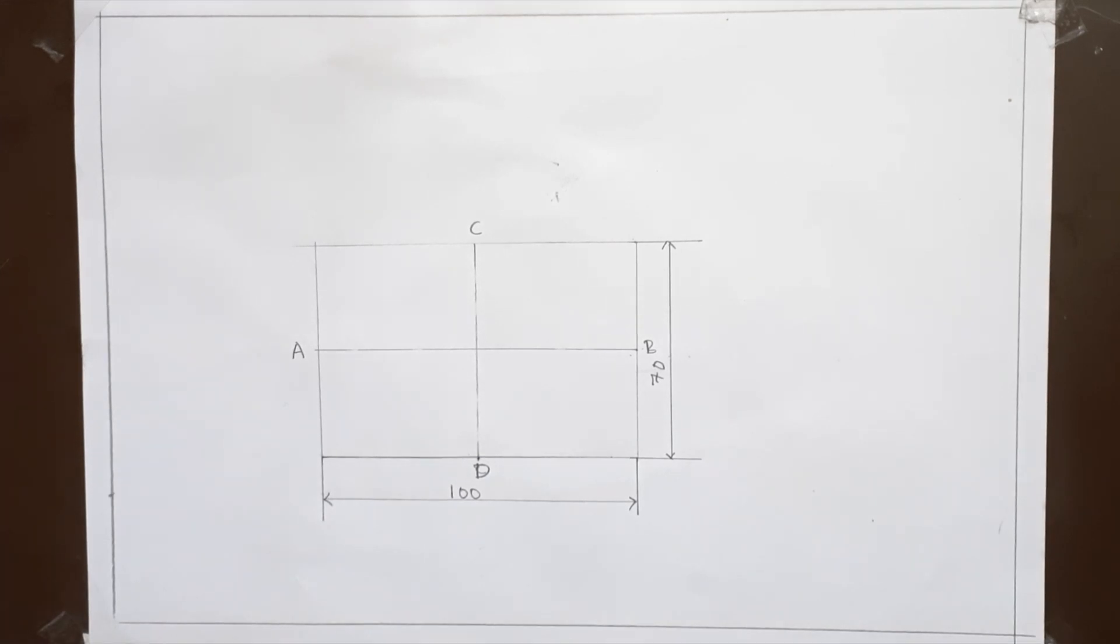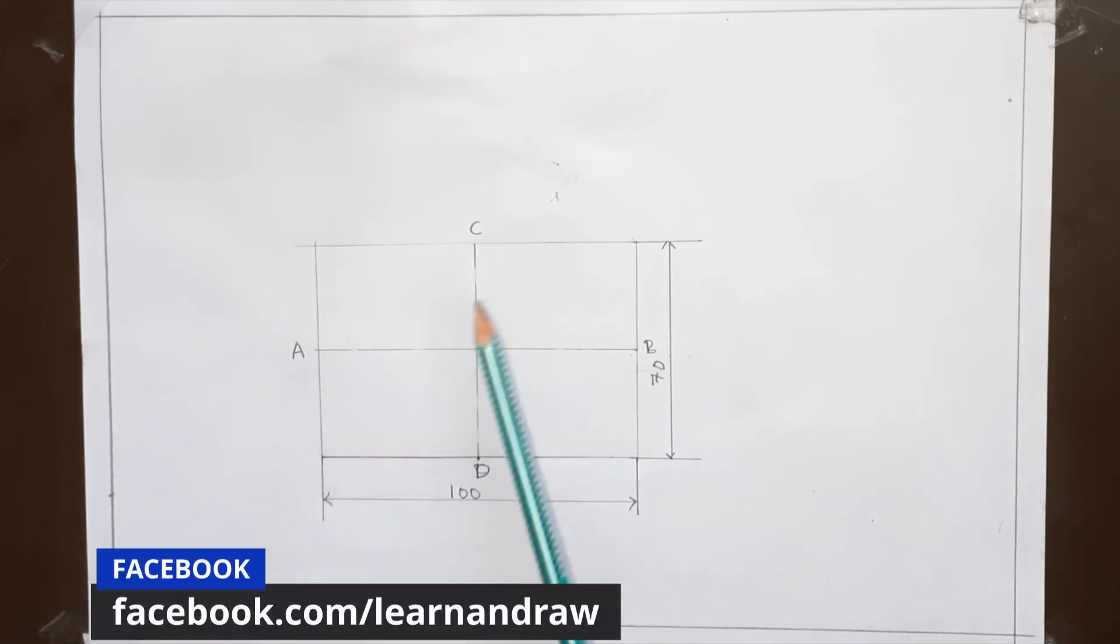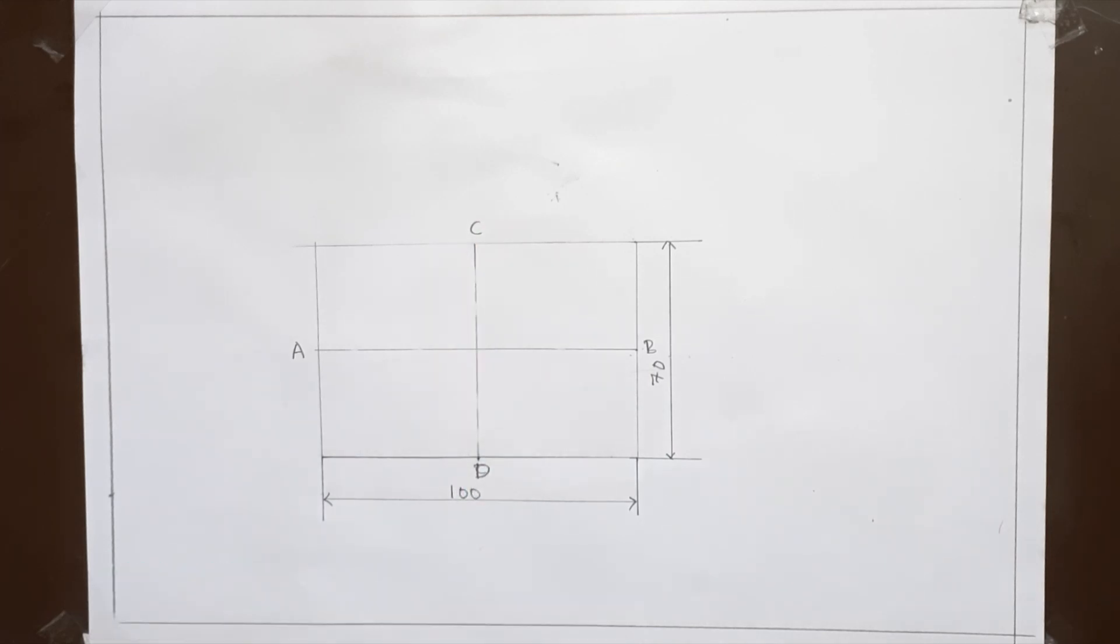So to draw the ellipse, we have got these 4 points available and we have to mark few more points to get the correct curve of our ellipse.